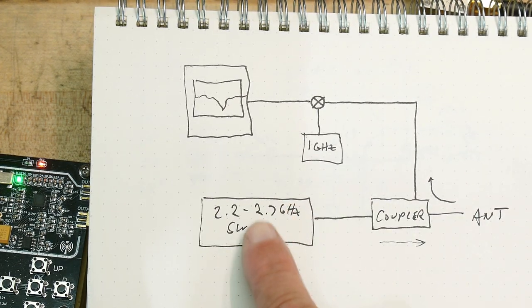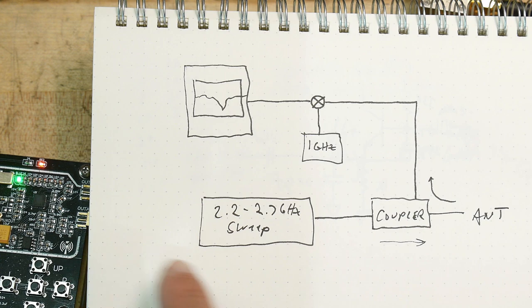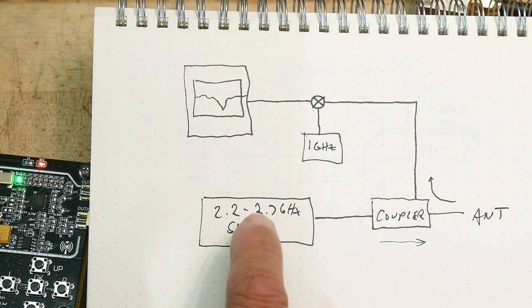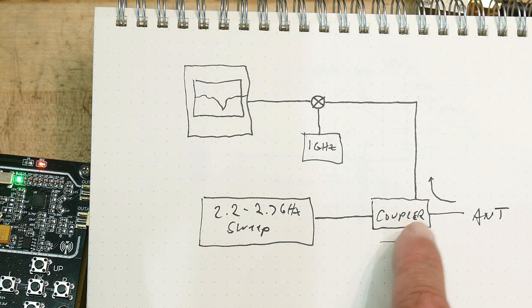Here's my antenna I want to test, so I'm going to use my little sweeper here. I'm going to set it up for 2.2 to 2.7 GHz. I believe the antennas are around 2.4 to 2.5 GHz. So I'm going to sweep from 2.2 to 2.7, go through the coupler into the antenna.